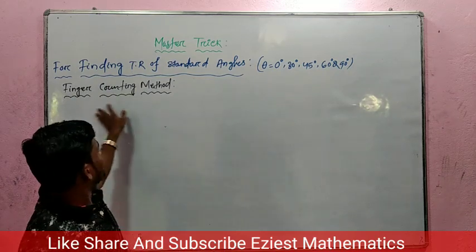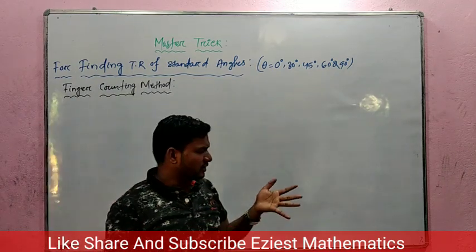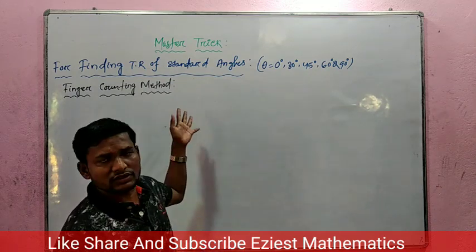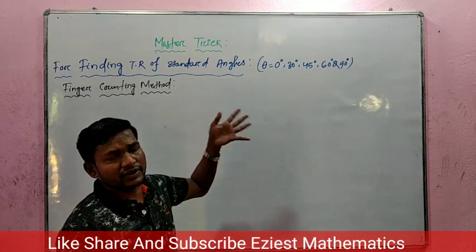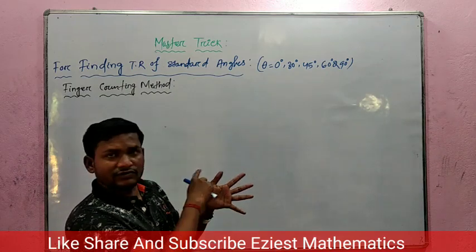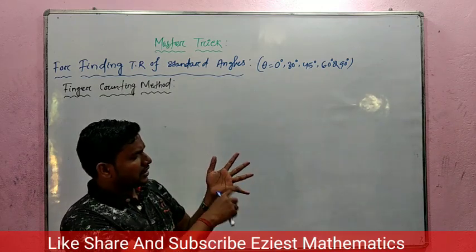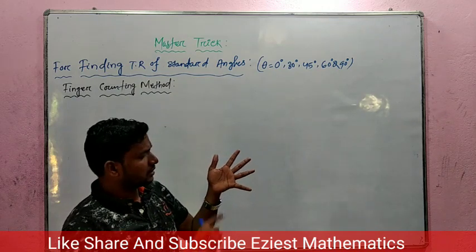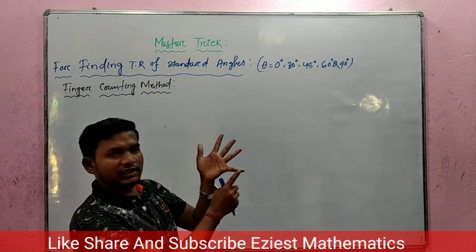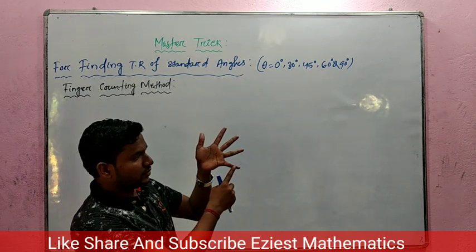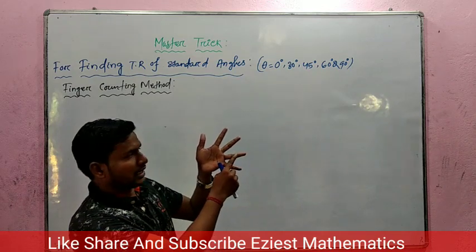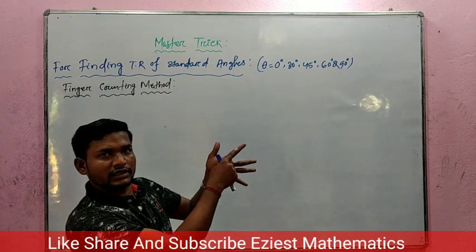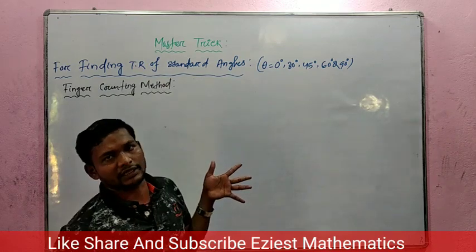This method is called the finger counting method. Just by counting fingers, we can find out the values of TR of different standard angles. Now we are going to use these 5 fingers. This finger is 0 degree, this one is 30 degree, this finger is 45 degree, this one is 60 degree, and this one is 90 degree.